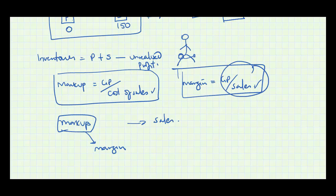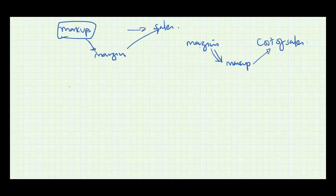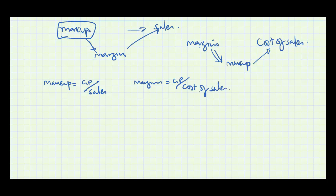If given markup and sales, you must convert the markup into a margin, then apply the margin to the sales. The second scenario is being given a margin alongside cost of sales — since these have nothing in common, you convert the margin into a markup first and then apply it. The conversion formula is key: markup is GP over cost of sales, and margin is GP over sales.